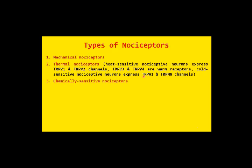The next type is chemical nociceptors, also known as chemically sensitive nociceptors. So the three major types of nociceptors are mechanical, thermal, and chemical — classified on the basis of the type of stimulus detected. Some nociceptors respond to any of these three stimuli and are separately classified as polymodal nociceptors, which may respond to mechanical, thermal, or chemical stimuli. Polymodal nociceptors are thus considered the fourth type.